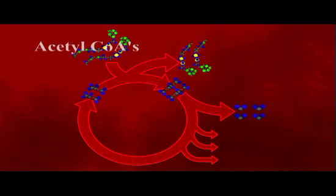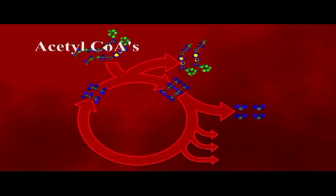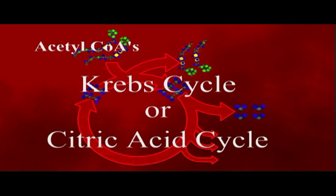The two acetyl-CoA molecules enter a cyclic pathway known variously as the Krebs cycle, referring to its discoverer Hans Krebs, or the citric acid cycle, named for the first product in the reaction sequence, citric acid. We'll refer to it as the Krebs cycle.